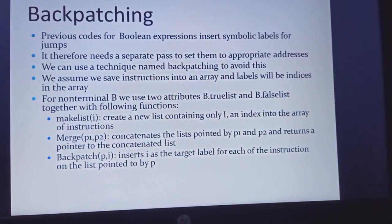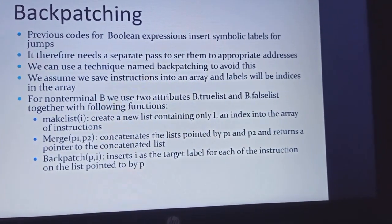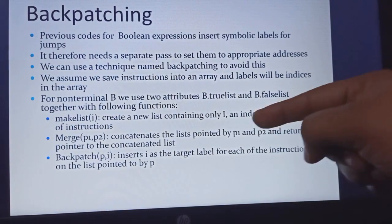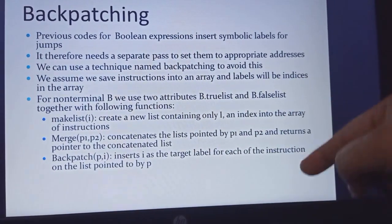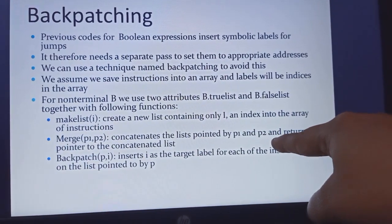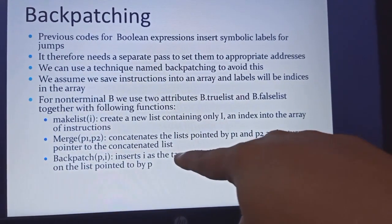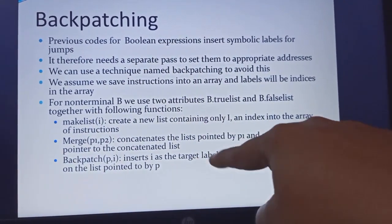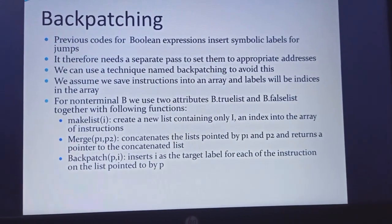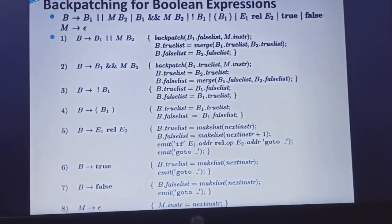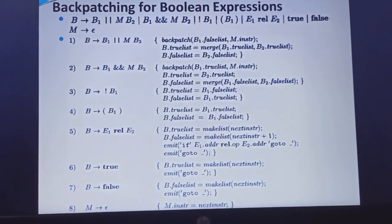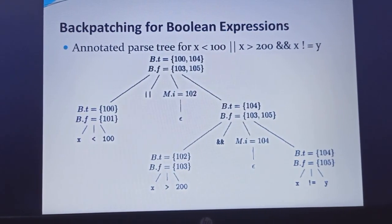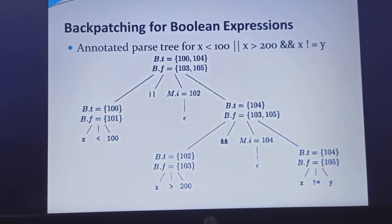In the backpatching function we have three functions. The first is make list: we create a new list. The next is merge: we concatenate the list as well as the pointer of elements, taking pointed elements or lists as P1 and P2, which returns the concatenated list. The next is backpatch: we insert a labeling value to that instruction. Patching means adding some more data to the instruction or data. This is a backpatch for Boolean expressions — adding more information to the expressions. This is the annotated parse tree for the Boolean expression in backpatching.